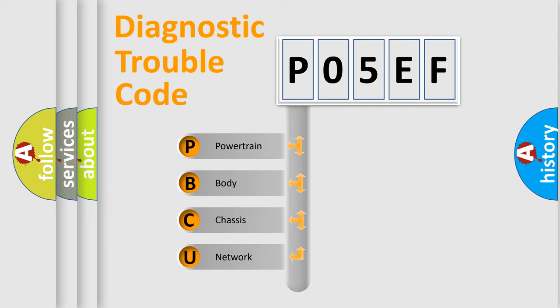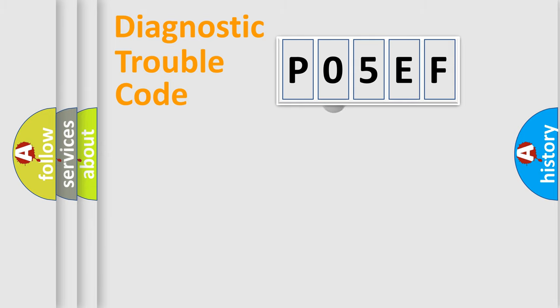We divide the electric system of automobile into four basic units: Powertrain, Body, Chassis, Network. This distribution is defined in the first character code.